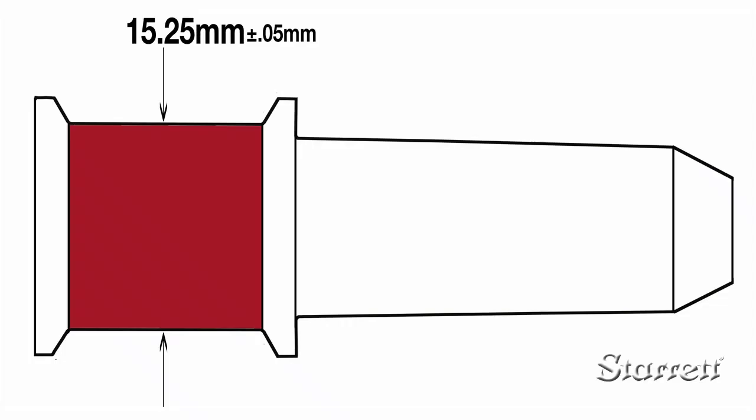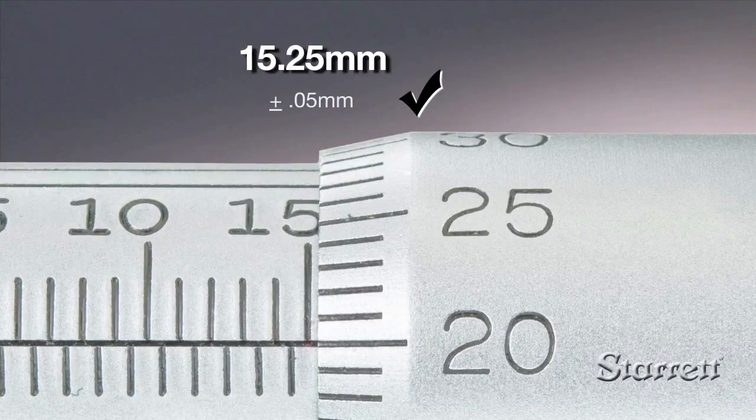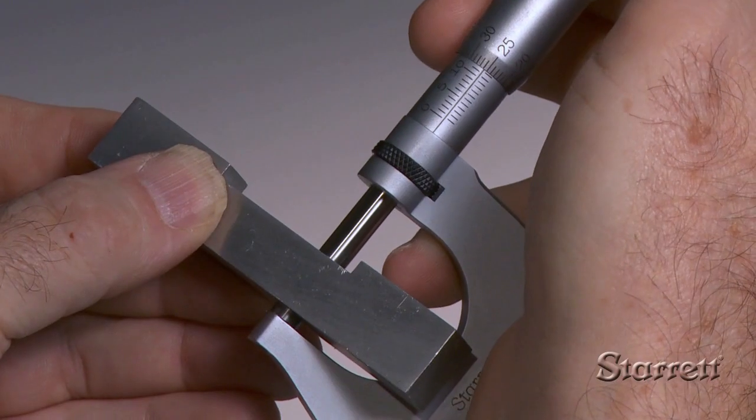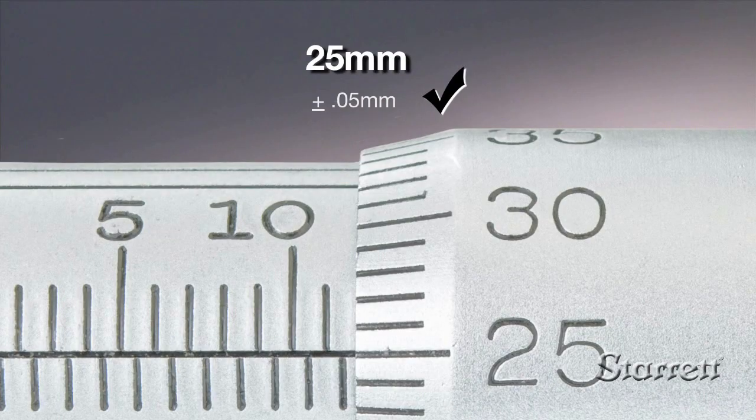With a little practice holding the micrometer in part, turning the spindle with just the right amount of force, and interpreting the information on the thimble and sleeve, you'll be able to make an accurate, reliable measurement every time.